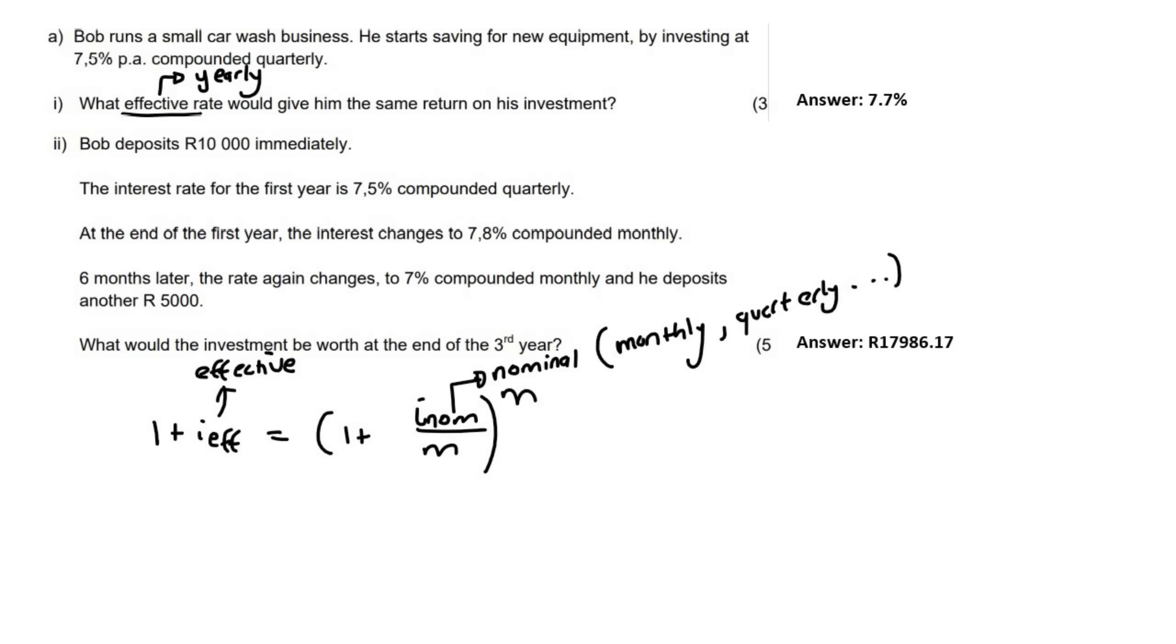So in this question, we are trying to find the effective. So we'll say one plus, now this is the unknown. Then on the other side, we will fill in. So the nominal interest rate is 7.5%. You might say 7.5%, I say 0.075. And then, because it's quarterly, that means I put a four at the bottom, and then I put a four over here.